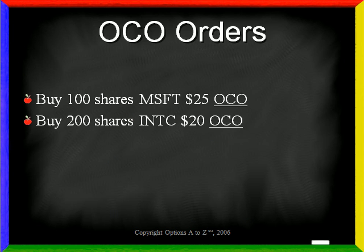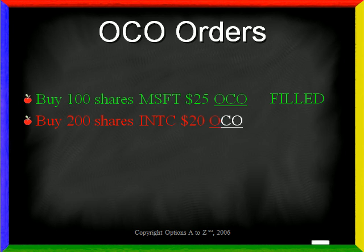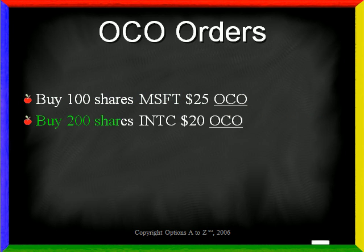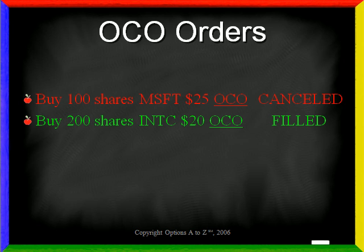For example, assume you place an order to buy 100 shares of Microsoft for a limit of $25 OCO, and also place another order to buy 200 shares of Intel for $20 per share OCO. Here's the way it works: if the first order is filled, then the second order is cancelled. On the other hand, if the second order is filled first, then the first order is cancelled.